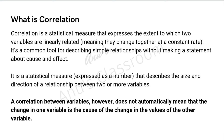So the million dollar question: what is correlation? Correlation is a statistical measure which expresses the extent to which two variables are linearly related — that is, whether they change together at a constant rate or not. For example, consider your marks and the time you spend studying. These two variables are generally thought of as proportional: the more you study, the more marks you get. This is what we mean by correlation — how much time you spend on studies will affect your marks.